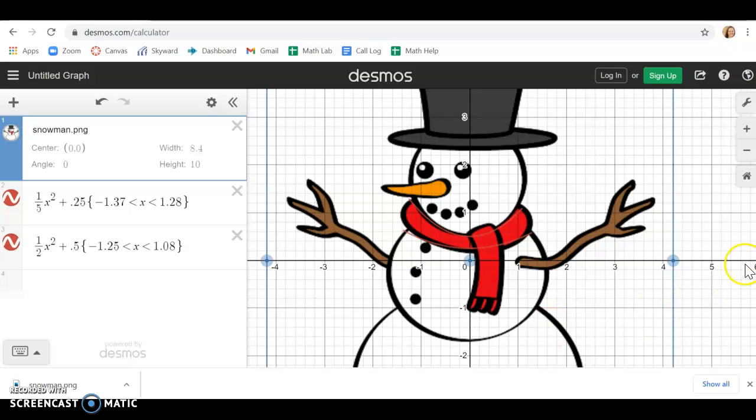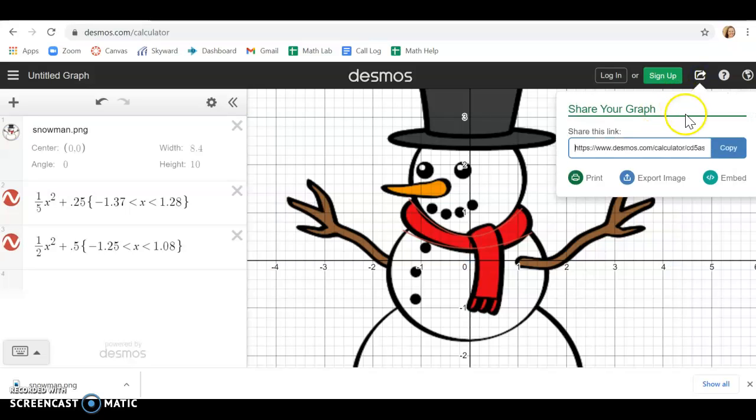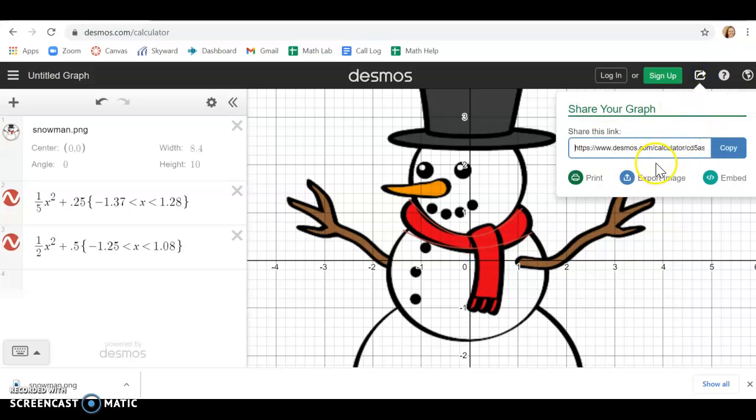You're also going to send me your Desmos page. So to send me your Desmos page when it's all done you're going to come hit this little share graph button and it's going to give you a shareable link. Okay then you're just going to hit copy. It's going to copy that. You'll go to an email and you'll email me the link.